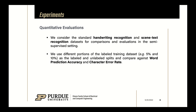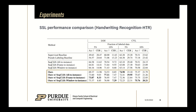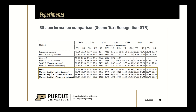We consider the standard handwriting recognition and scene text recognition datasets for comparisons and evaluations of our proposed method in the semi-supervised setting. We use different portions of the labeled training dataset as the labeled and unlabeled split, and compare against word prediction accuracy and character error rate. For handwriting recognition, our method outperforms the current self-supervised base method SeekCLR. Similarly, for scene text recognition, we observe consistent improvements.